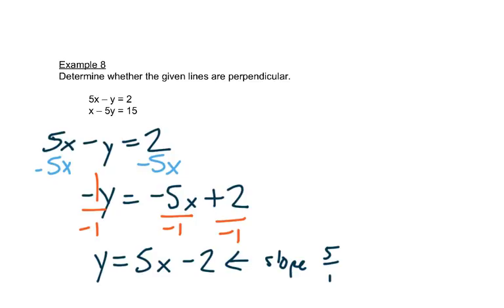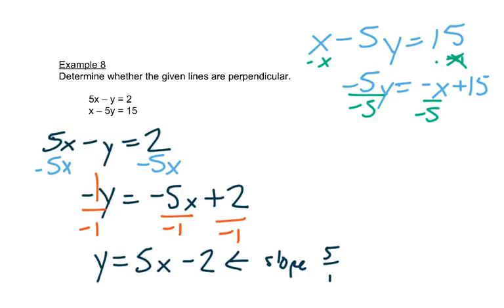So let's do the same thing for our other equation. We have x minus 5y equals 15. We'll subtract x from both sides. That gives us negative 5y equals negative x plus 15. Then we'll divide each piece by negative 5. That gives us y equals, two negatives is a positive, there's really a 1 here, so we have 1 fifth x minus 3. So my slope here is positive 1 fifth.